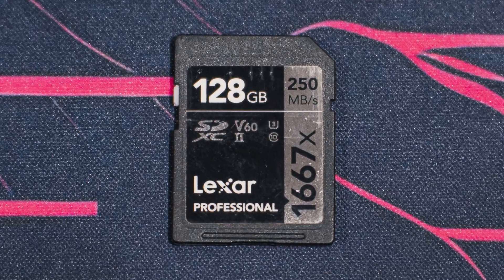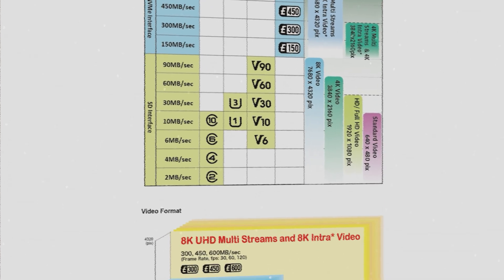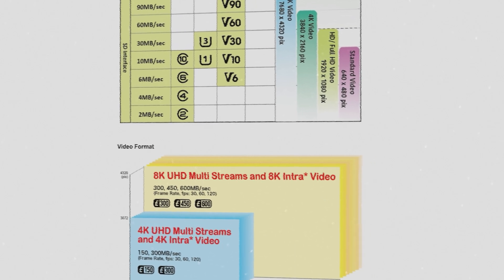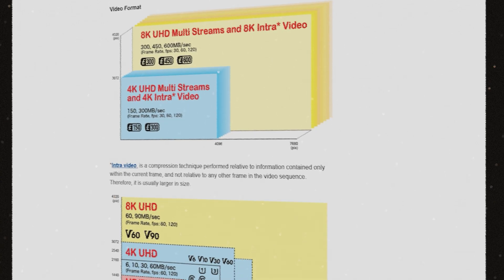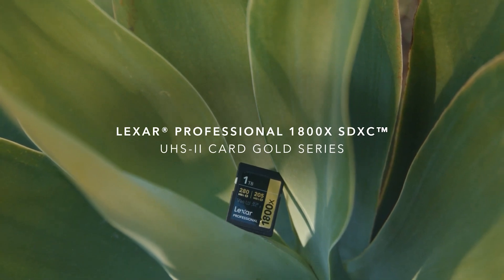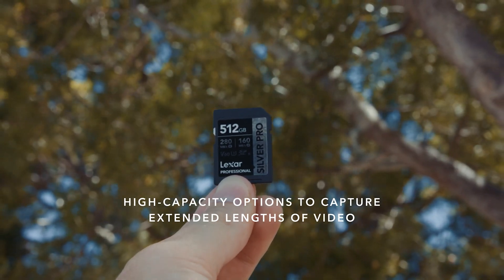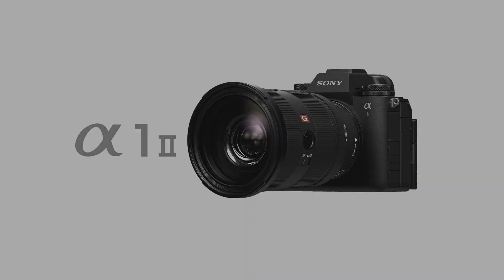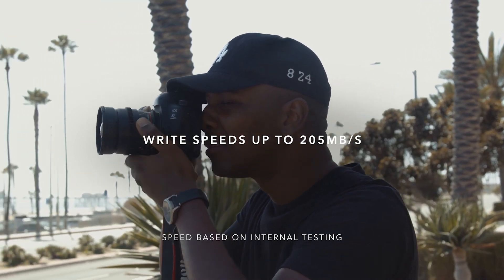Next, we have the U symbol, which is known as the ultra high speed or UHS speed class. This speed class comes with two ratings: U1 and U3. U1 cards can be used to record videos up to 4K resolution, while U3 cards can be used for up to 8K resolution. The biggest thing to note is that U3 cards have a guaranteed minimum write speed of 30 megabytes per second. Generally speaking, the UHS speed class is used more often than the standard speed class cards. Most high-end cameras require at least a U3 rated memory card for recording high resolution videos.